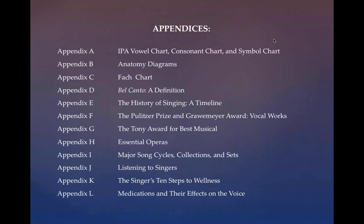There are also several appendices: an IPA vowel chart, anatomy diagrams, a Fach chart, a definition of bel canto, a history of singing, a timeline, appendices on prizes such as the Pulitzer, Grammie, and Tony, essential operas, major song cycles, listening to singers, Karen Wickland's Singer's Ten Steps to Wellness, and Ingo Titze's medications and their effects on the voice — which is constantly updated on the NCVS website since print versions become outdated immediately.